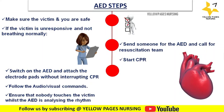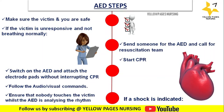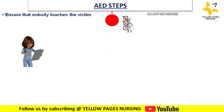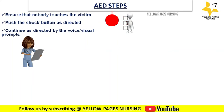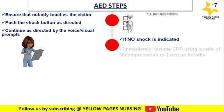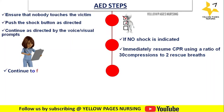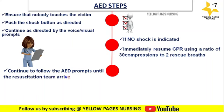Follow the audio-visual commands and ensure that nobody touches the victim whilst the AED is analyzing the rhythm. If a shock is indicated, ensure nobody touches the victim and push the shock button as directed. If no shock is indicated, immediately resume CPR using a ratio of 30 compressions to 2 rescue breaths. Continue to follow the AED prompts until the resuscitation team arrives or the victim starts to breathe normally.